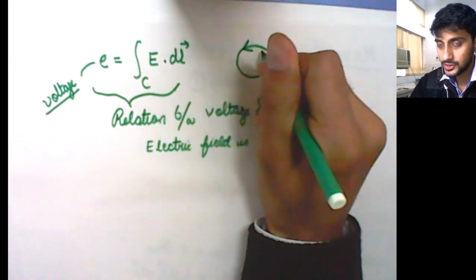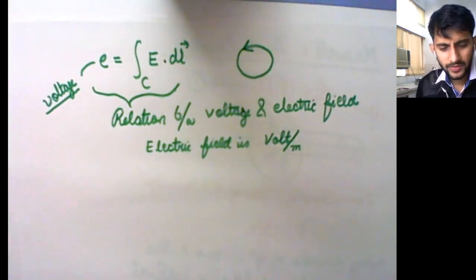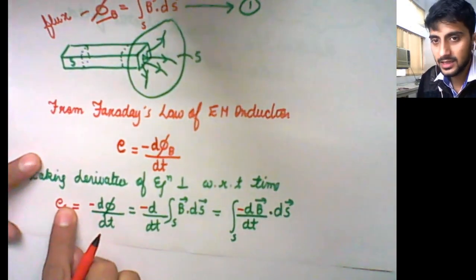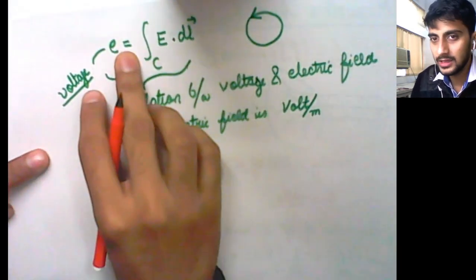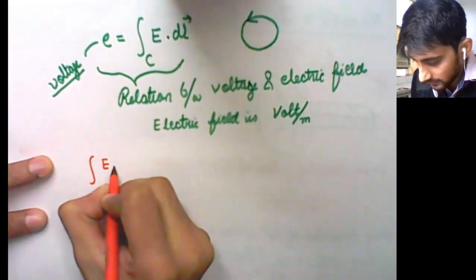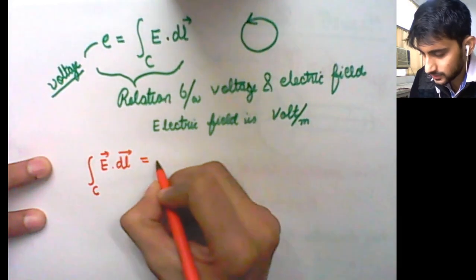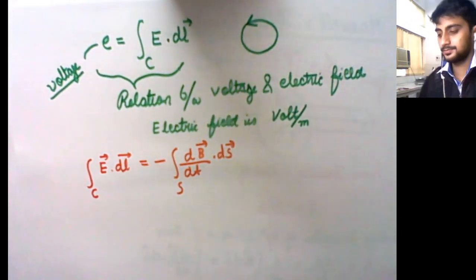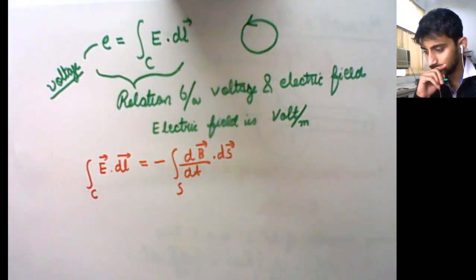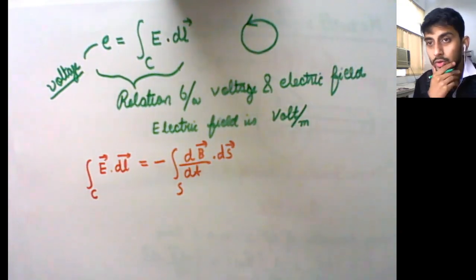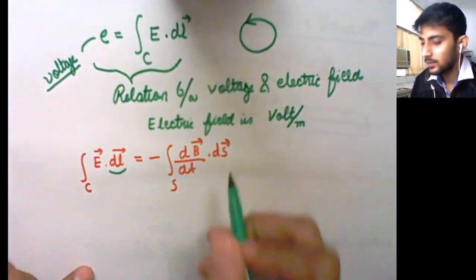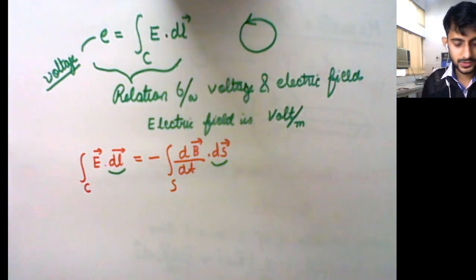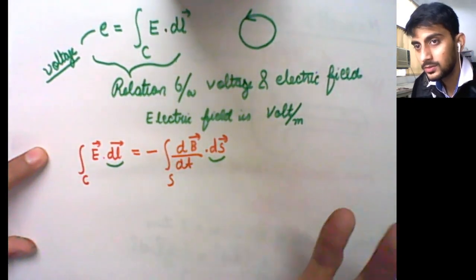Applying Stokes' theorem to the line integral ∮E·dl, we get the surface integral of curl of E (∇×E)·dS. Setting this equal to −∫(∂B/∂t)·dS and comparing the two surface integrals, we can equate the integrands: curl of E equals −∂B/∂t.